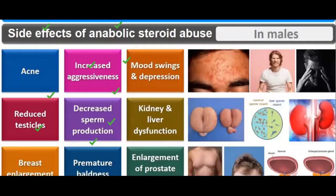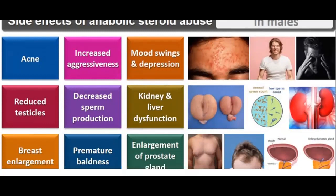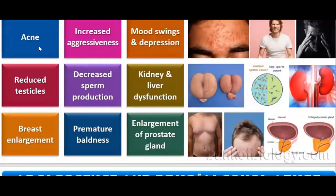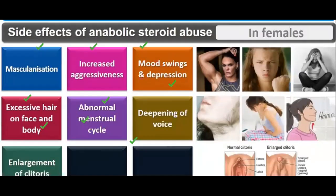Side effects of anabolic steroid abuse in males include acne, increased aggressiveness, mood swings and depression, reduced testicles, decreased sperm production, kidney and liver dysfunction, breast enlargement, premature baldness, and enlargement of the prostate gland, which can even lead to prostate cancer. In females, side effects include masculinization, increased aggressiveness, mood swings, excessive hair on the face and body, abnormal menstrual cycle, deepening of the voice, and enlargement of the clitoris.